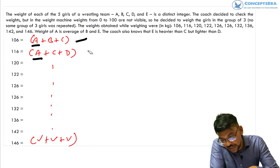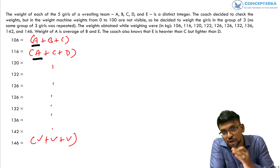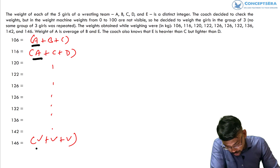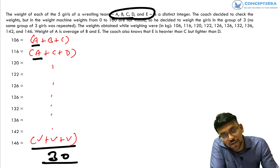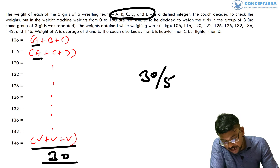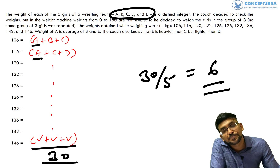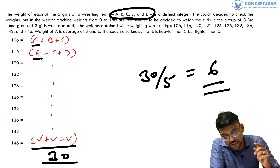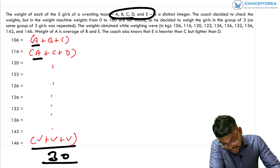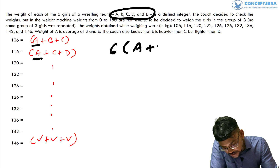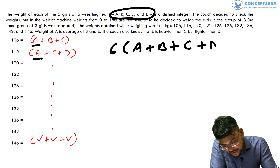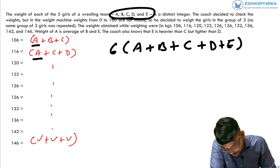So total appearances of A plus B plus C plus D plus E should equal 30. Since there are five alphabets appearing 30 times in total, each alphabet will appear 6 times — that is 30 divided by 5. So immediately we can write: 6 × (A + B + C + D + E) = summation of all 10 group weights.